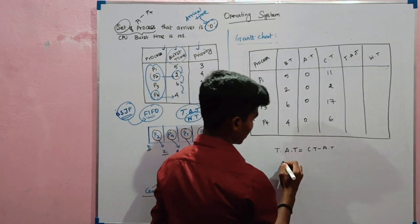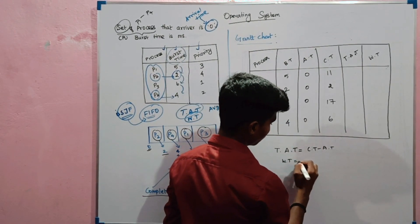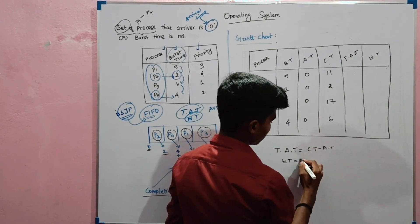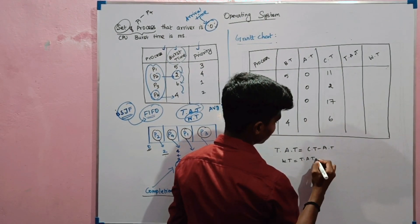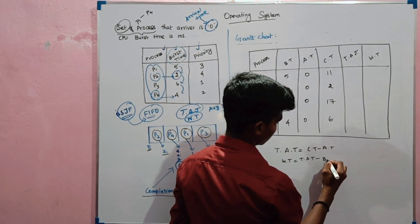And then waiting time: waiting time equals turnaround time minus burst time, i.e., TAT minus BT.